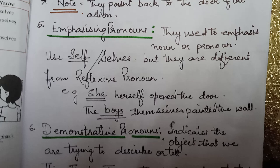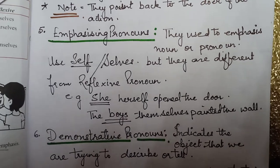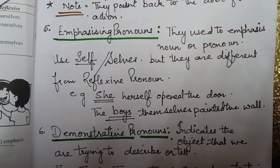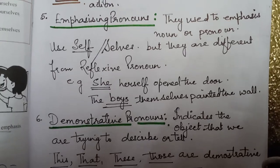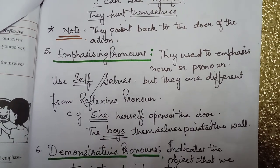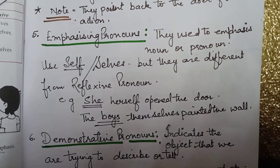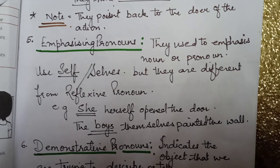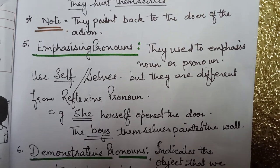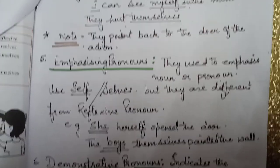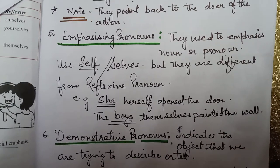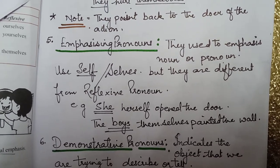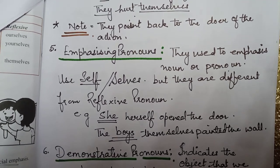Emphasizing pronouns look similar to reflexive pronouns, but they are different — they do not point back to the doer of the action. We also use self and selves here. For example: 'She herself opened the door. The boys themselves painted the wall.' Here, 'herself' is an emphasizing pronoun emphasizing 'she,' and 'themselves' is emphasizing the noun 'boys.'